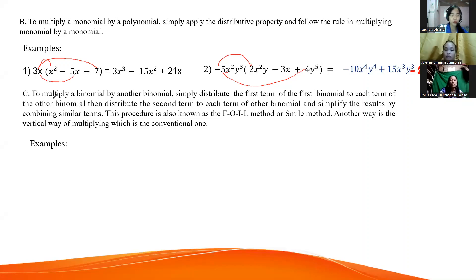Let's proceed to letter C. To multiply a binomial by another binomial, simply distribute the first term of the first binomial to each term of the other binomial, then distribute the second term to each term of other binomial, and simplify the result by combining similar terms. This procedure is also known as the FOIL method or SMILE method. Miss, what's the meaning of FOIL method?